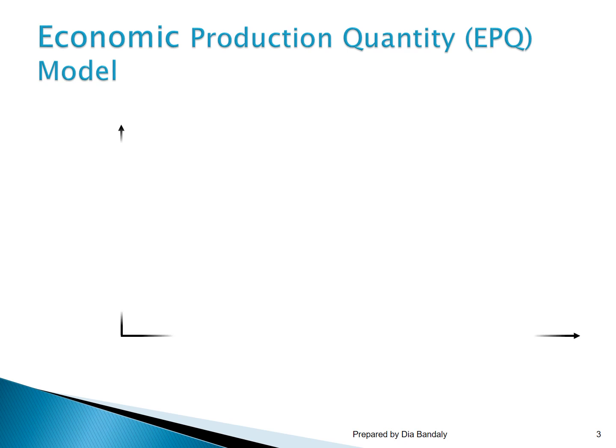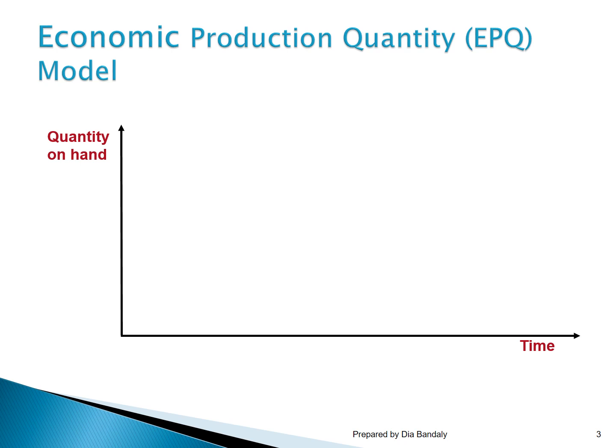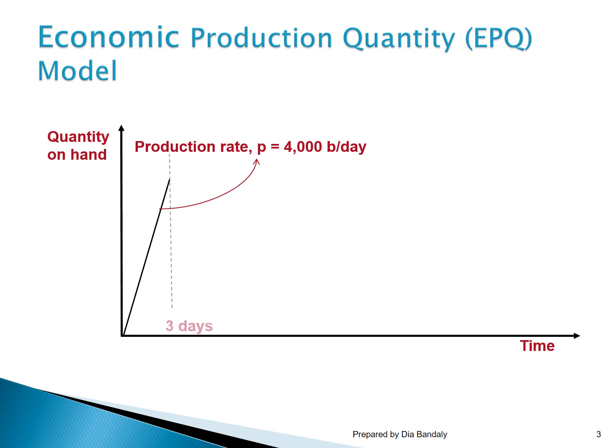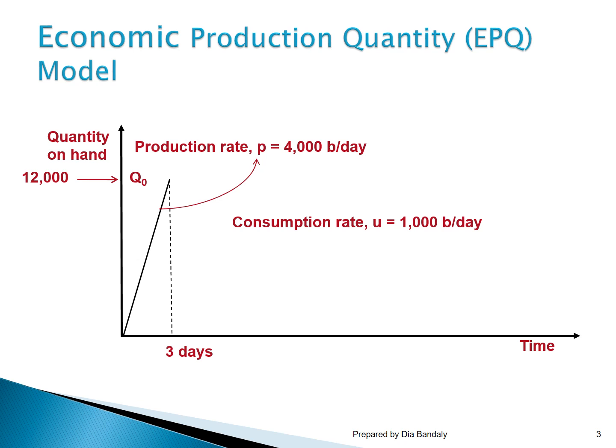Let's see how the quantity on hand changes over time. Assume we have an equipment that can make bottles at a rate of 4,000 per day, and we run production for three days. After three days, the total amount of bottles made is 12,000. These bottles are used in our filling line — we send empty bottles to the juice production line and fill them with juice. The consumption rate is 1,000 bottles per day.